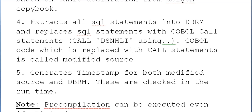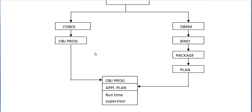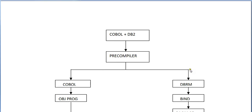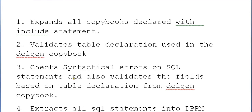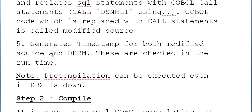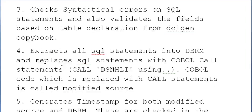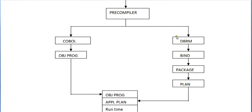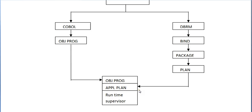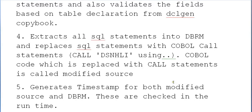The COBOL code where SQL statements have been replaced with call statements is called the modified source. All SQL statements are loaded into the DBRM and the code with call statements is the modified source code. The pre-compiler also generates timestamps for both the modified source and the DBRM, which are checked at runtime. During runtime, it checks that the timestamps of both the COBOL object program and the DBRM match — only then can the COBOL plus DB2 program run.